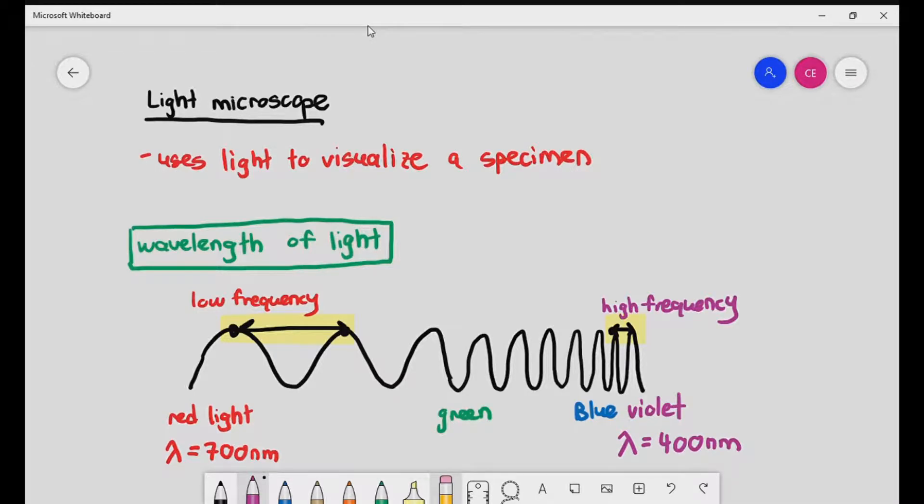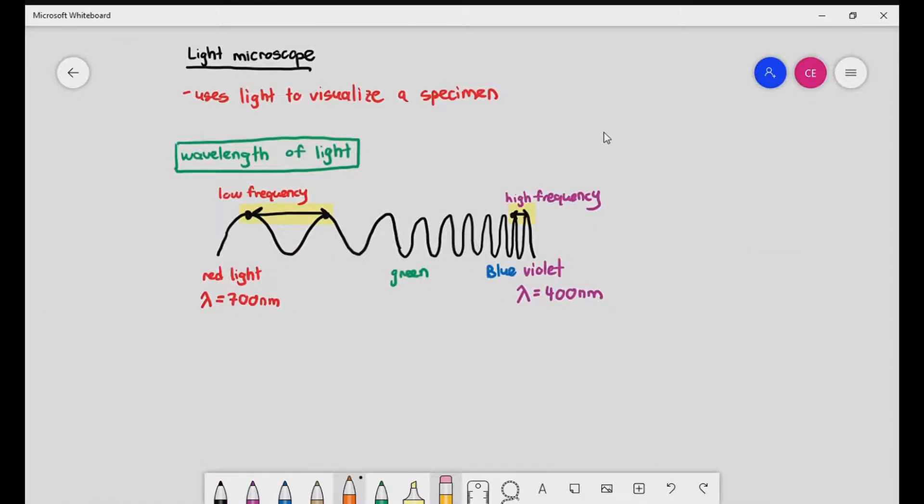Now, why does this matter? A lot of students are like, why do I care about this? Why do I have to give a damn about the wavelength of light? How does this matter in biology? Kind of does. So in Cambridge, it is extremely important to know for your A-levels that red light has a frequency of 700, a wavelength of 700 nanometers. It's a low-frequency wavelength. And violet light has a 400 nanometer wavelength and it's high frequency.